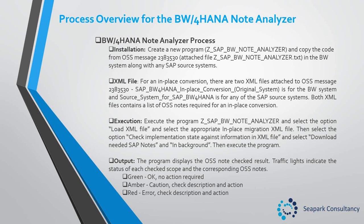For an in-place conversion, there are two XML files attached to OSS message 2383530. SAP BW4HANA in-place conversion original system is for the BW system, and source system for SAP BW4HANA is for any of the SAP source systems. Both XML files contain a list of OSS notes required for an in-place conversion.